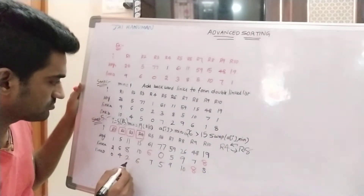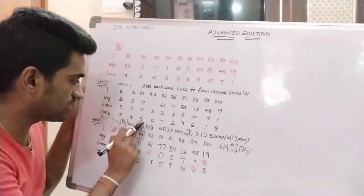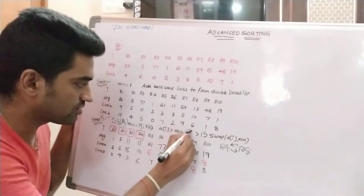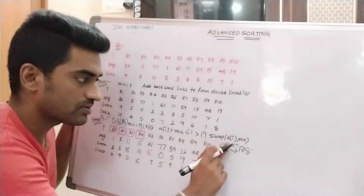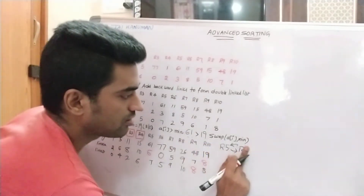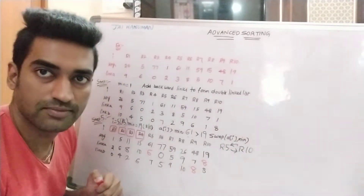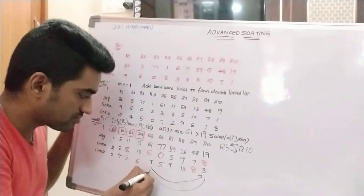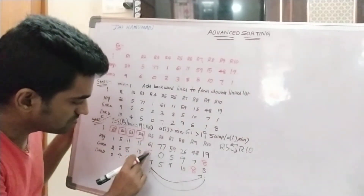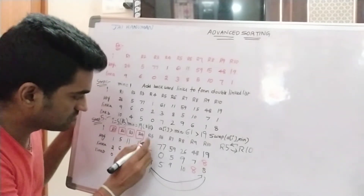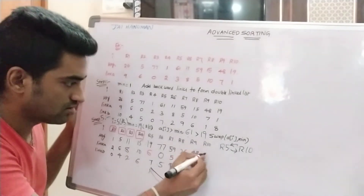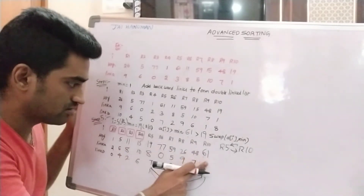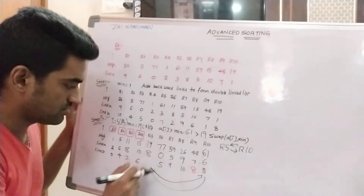I value is 5, E[5]=61 greater than 19 (minimum element 90 at R10). Condition is true, so we are swapping R5 and R10. After swapping: values 90 and 61, links updated to 8 and 6 respectively.